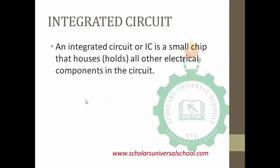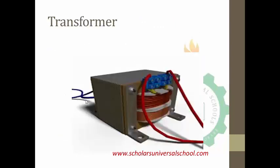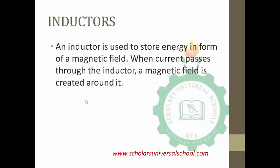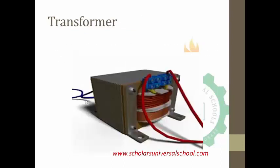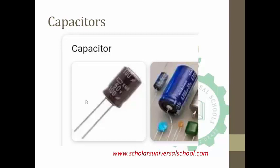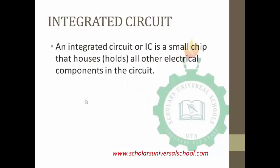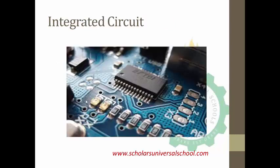The next device is the integrated circuit, or IC. An integrated circuit is a small chip that houses all other electrical components in the circuit — the components we have mentioned earlier, ranging from the resistor, the capacitor, inductors, transformers, and transistors. They are all soldered and placed on the integrated circuit. It is the integrated circuit that houses and connects all the electrical components together in the circuit, to enable them to perform their functions as expected.